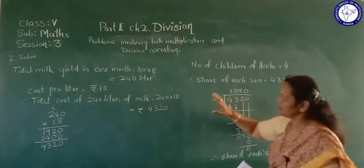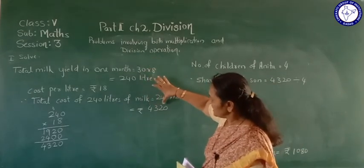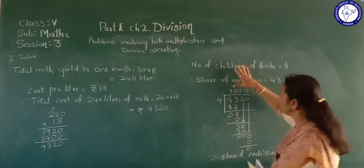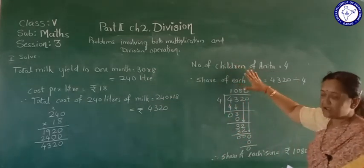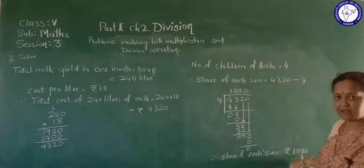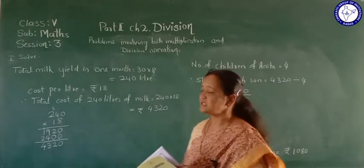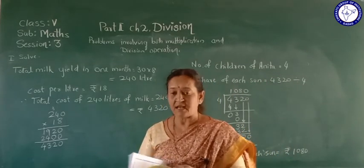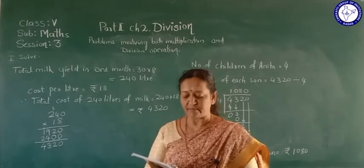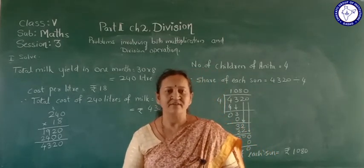The cost of milk is 4,320. Anita shares this amount among her 4 children, and each son gets rupees 1,080 every month. We have completed this chapter on division. In our next session, we will go to mental arithmetic — that is a new chapter. Till then, have a good day children.